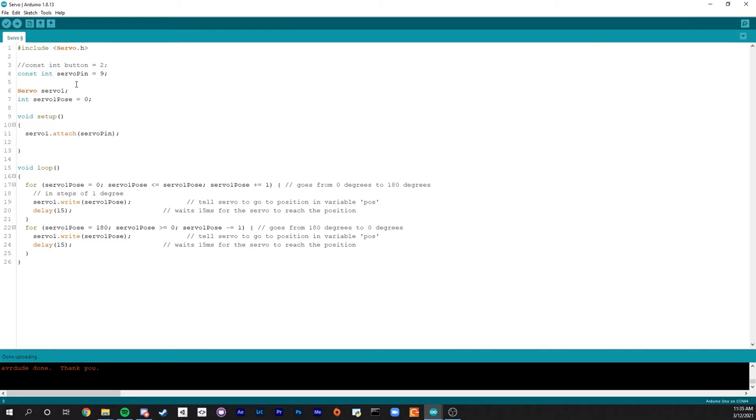The first thing I did was just test out the servo and nothing else. So I made sure to include my servo library, define the pin, the servo object, attach it, and then just do a simple sweep.